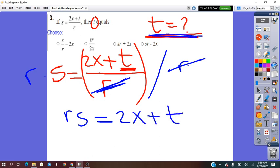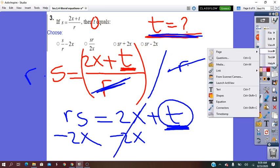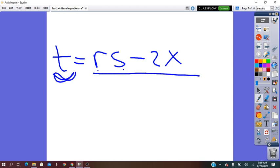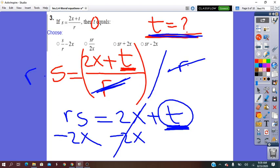They ask us to find the t. So I will go and look after the t. It is written only on the right side. So this is going to be the subject of this equation. Minus 2x on both of the sides. It will be t equals rs minus 2x. So we solve for t in terms of r, s, and x. And the correct answer will be this one.